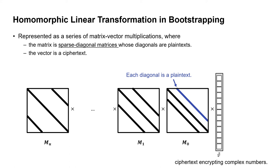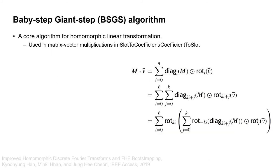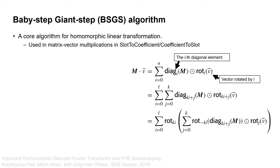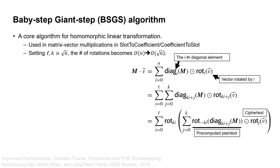An algorithm called baby step-giant step (BSGS) is used to compute this matrix-vector multiplication. The multiplication between a sparse diagonal matrix M and a vector V computes a dot product between the i-th diagonal element (precomputed) and the input vector rotated by i, which is a ciphertext. The BSGS algorithm turns this into two loops with loop variables L and K, where the rotated vector is a ciphertext and the multiplicand is a precomputed plaintext. By setting both L and K to around √n, the number of expensive HE rotations becomes O(√n) instead of O(n).